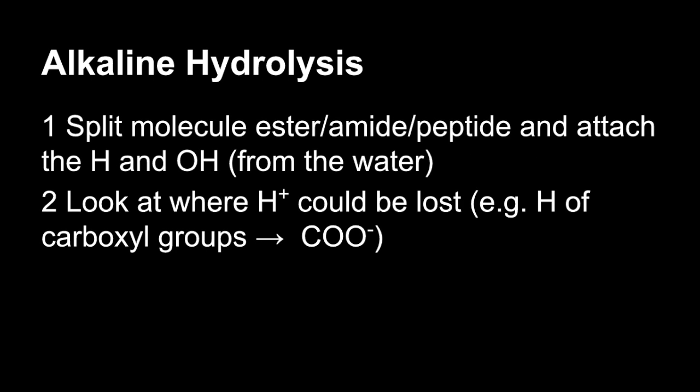For alkaline hydrolysis, you do the same thing first, split and attach the H and the OH from the water. And then you need to look for where H plus could be lost this time. So it could be the H from a carboxyl group. So a COOH would turn into COO minus.